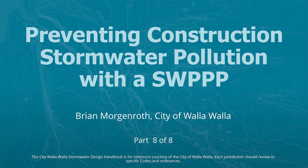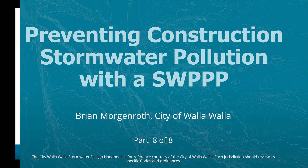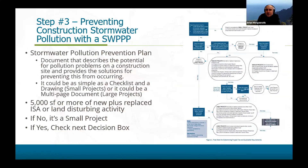Step number three: preventing construction stormwater pollution with a SWIP. SWIPs are one of those things called for in our stormwater permit that we're required to review. We like to see them — we like to see that projects are aware that they have to control their construction stormwater runoff and not cause pollution to our receiving water bodies or to our groundwater.